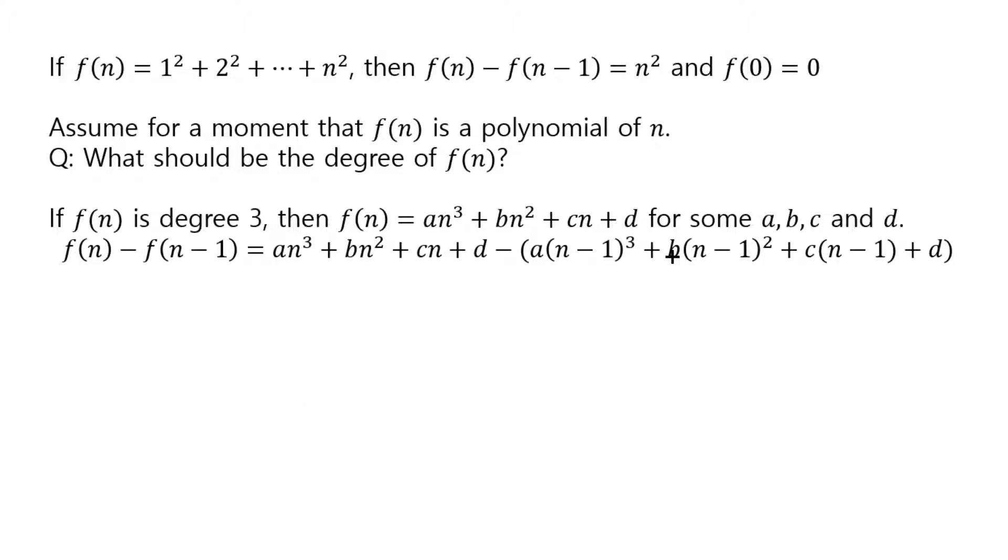Then you compute this, and hopefully you remember how to do (n-1) cubed. But if you forgot, you can just multiply (n-1) times (n-1) times (n-1), 3 times, and that gives you n cubed minus 3n squared plus 3n minus 1. But anyways, it's just a very straightforward calculation. Just do it.